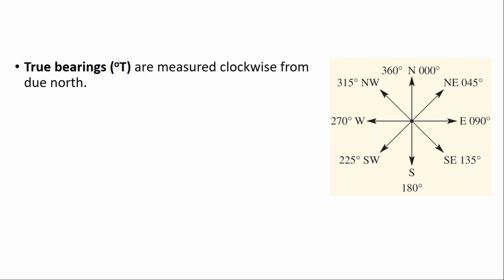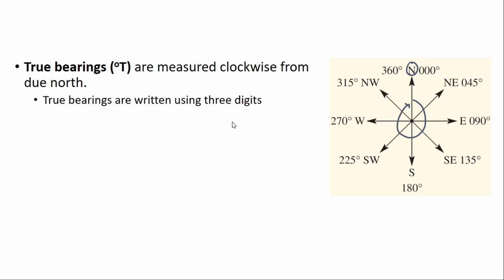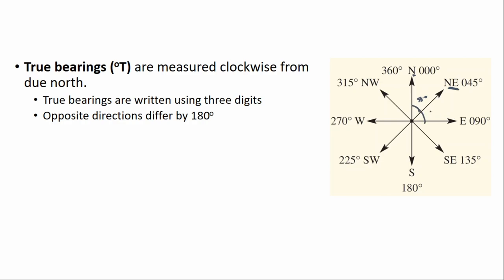Starting off with true bearings — these are measured clockwise from due north. So due north is up the top, and clockwise is going around that way. True bearings, as you can see on the diagram, are measured using three digits. The bearing of the point northeast is 45 degrees from north, so that angle there is 45 degrees. The bearing of east from north will be 90 degrees — that's how we read this.